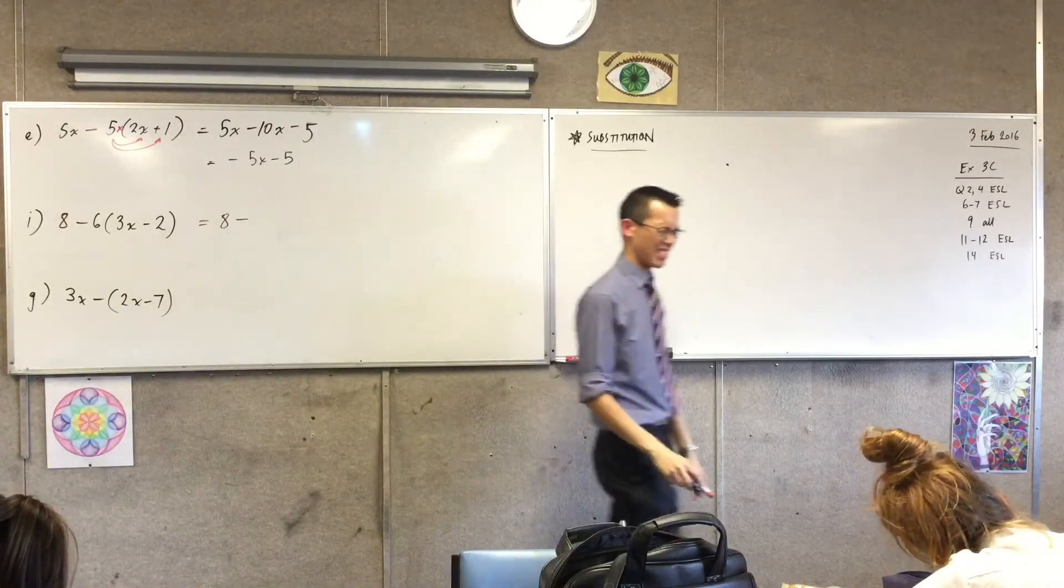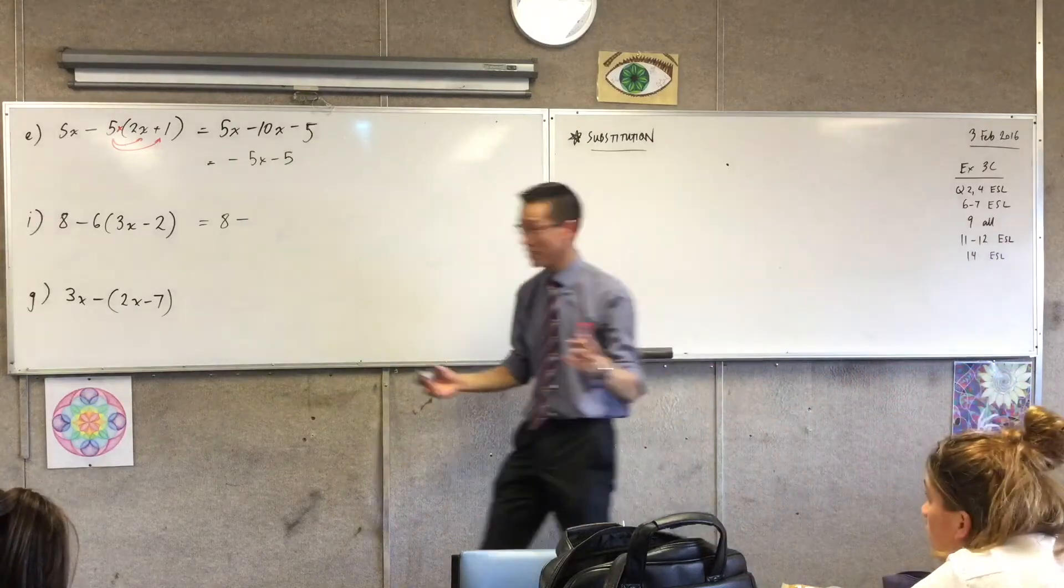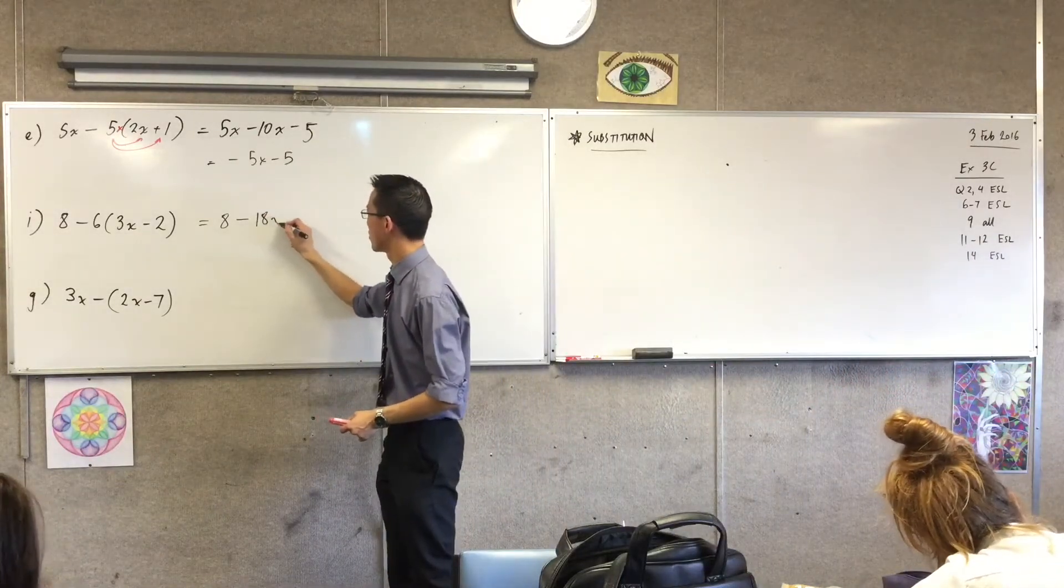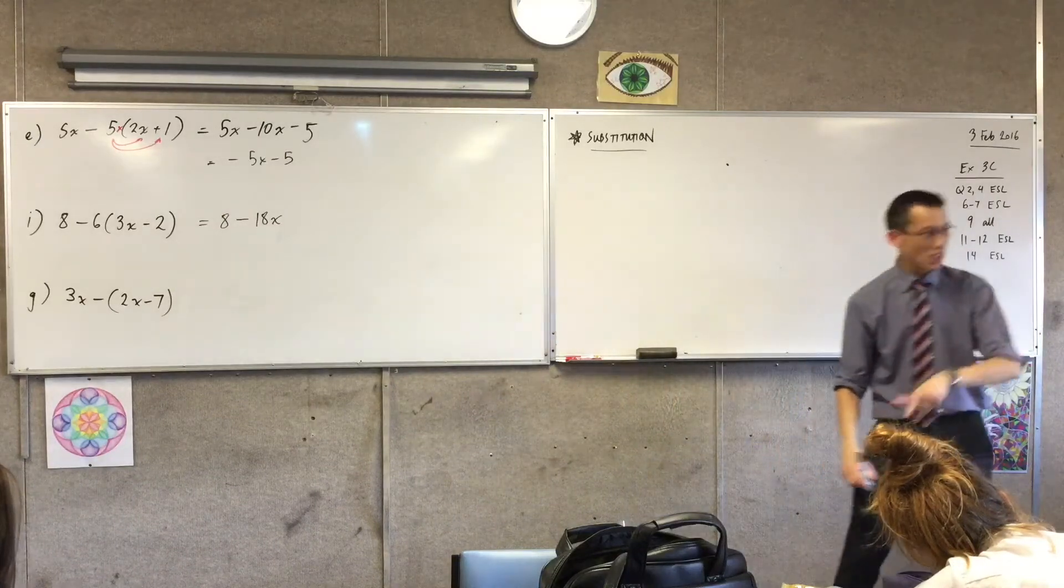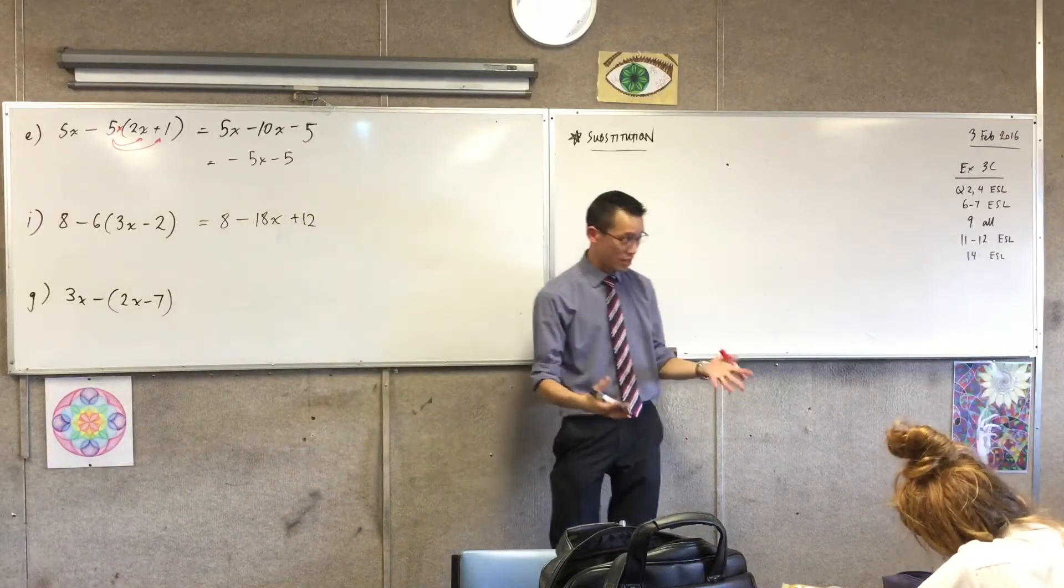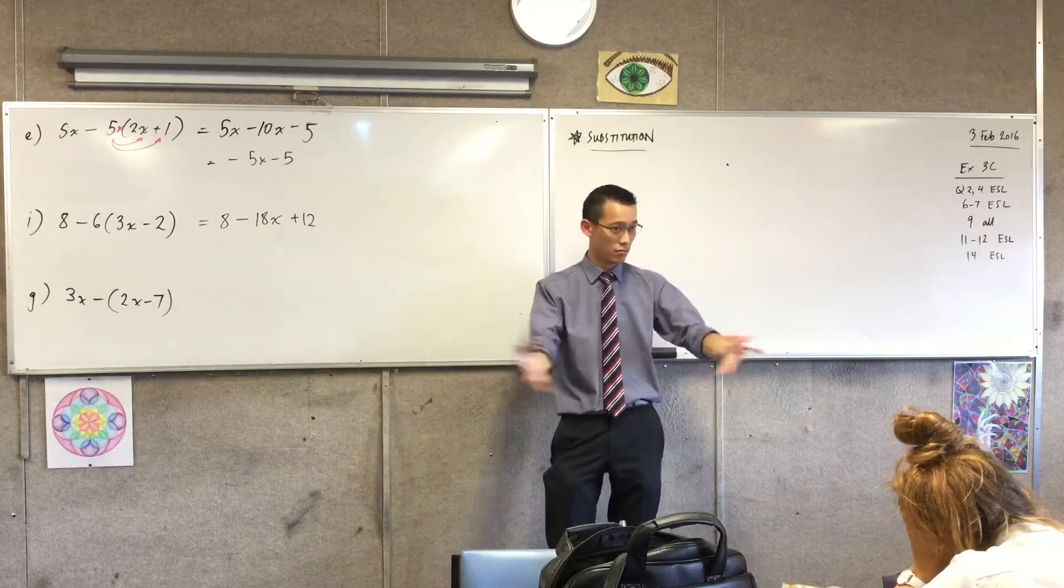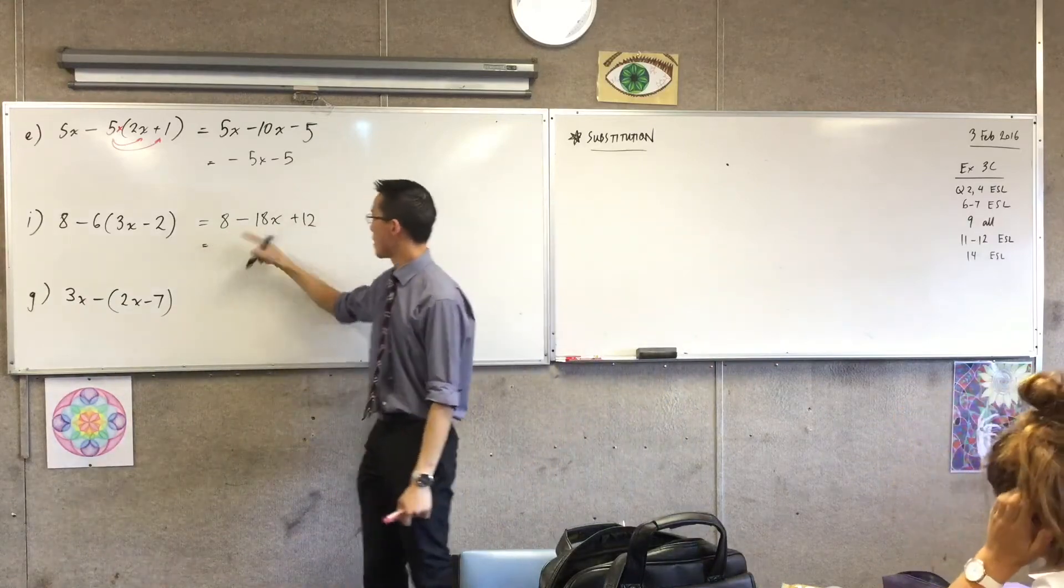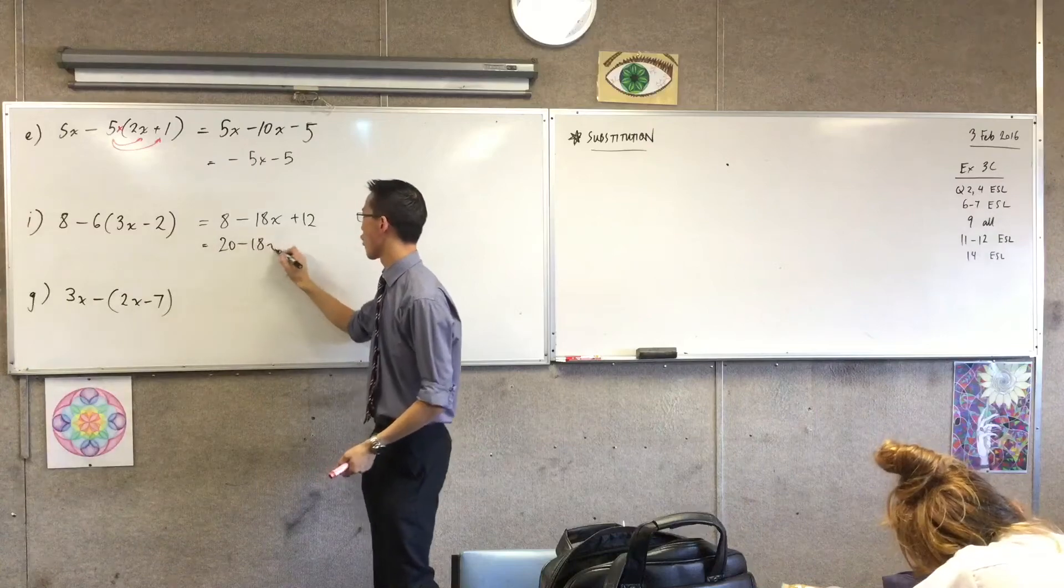So 8 take away 6 times 3x, which is how many x? 1 by 3, 18. And then when you take away 6 lots of taking away 2, it's plus 12, right? One last time, you can see like terms are revealed now by expanding so I can collect them. 8 plus 12 gives me 20 and I'm home. Now, last one I was just going to show you, and then we'll move on to substitution.